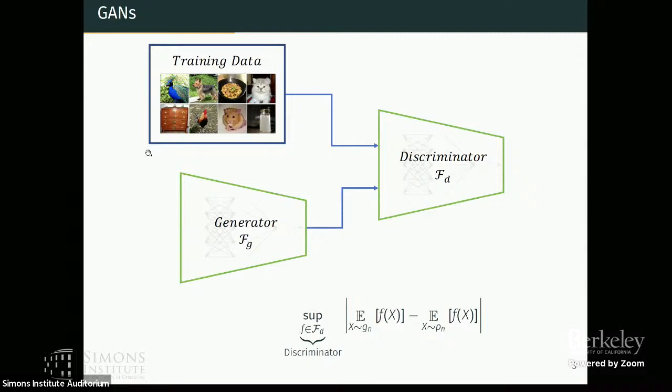And then you can think of the GAN estimate as choosing a distribution among those that the generator can represent such that this maximum discrepancy is as small as possible. So you can think of this as simply a GAN estimate for the true distribution.